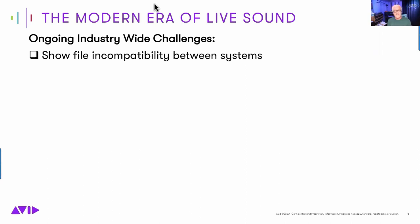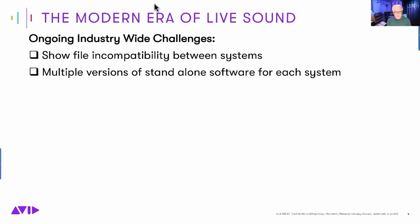The first challenge is show file incompatibility between systems. This was one of the first ones we attacked when we came to market. We wanted to give users the ability to use the same show file regardless of what console they were on in our given line. We didn't want to make them learn two or three different versions of software. But this is still going on outside the walls of AVID — there's still a lot of incompatibility between show files, even within a given product line. If you're a mixer moving from system to system, even within a given product line, that can get very complex and time consuming.